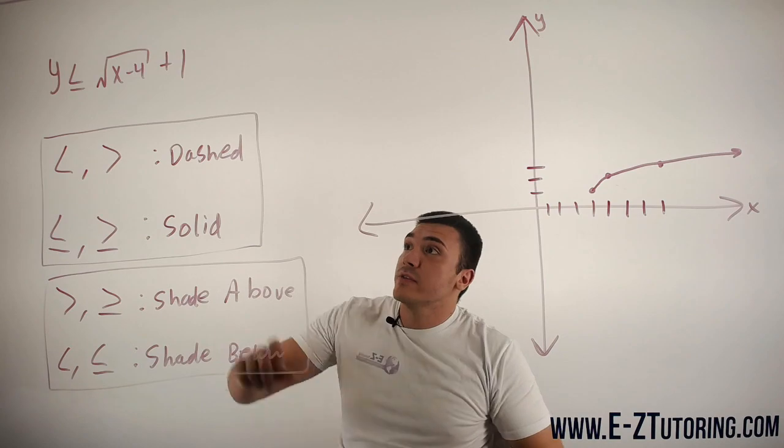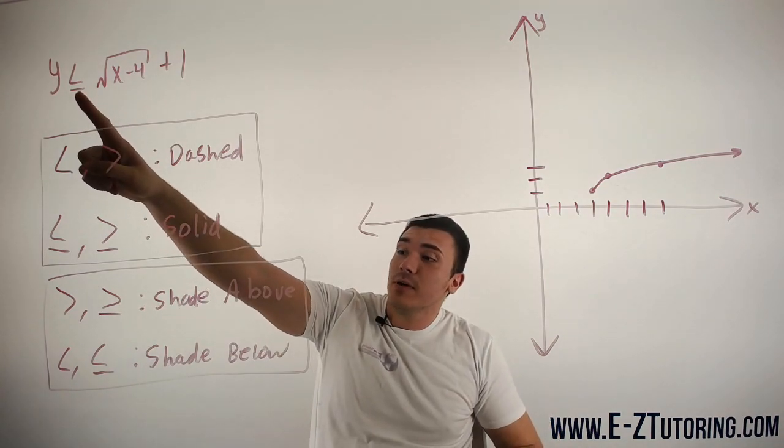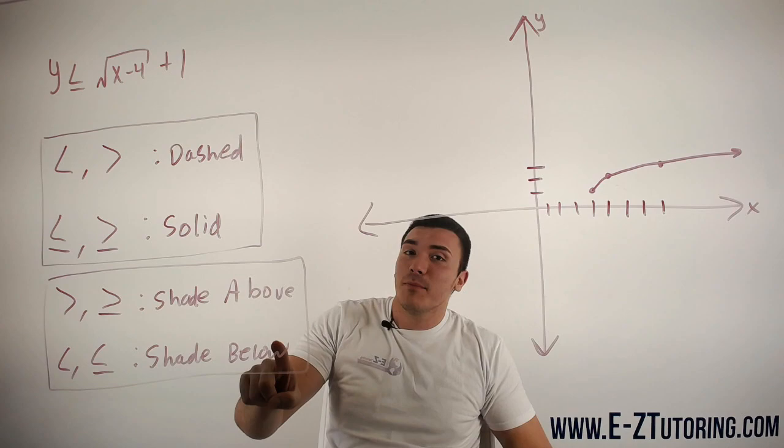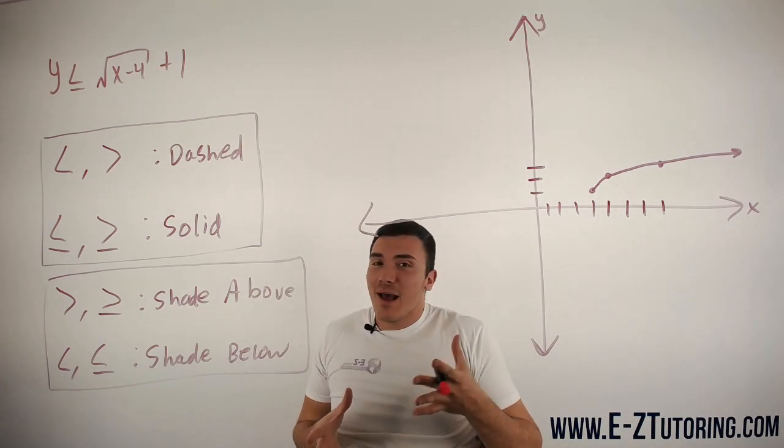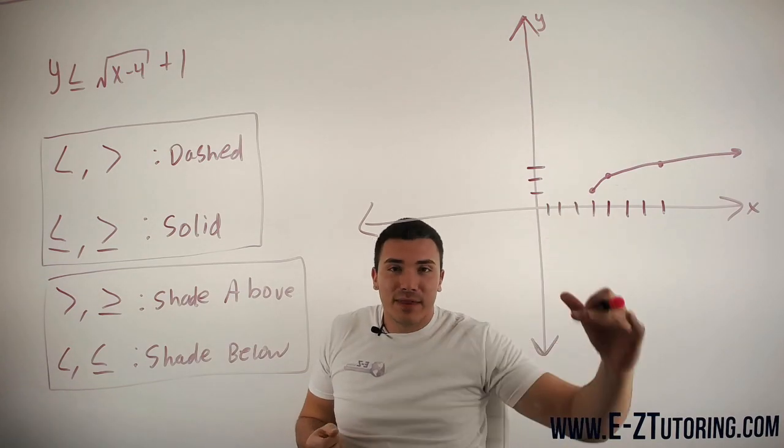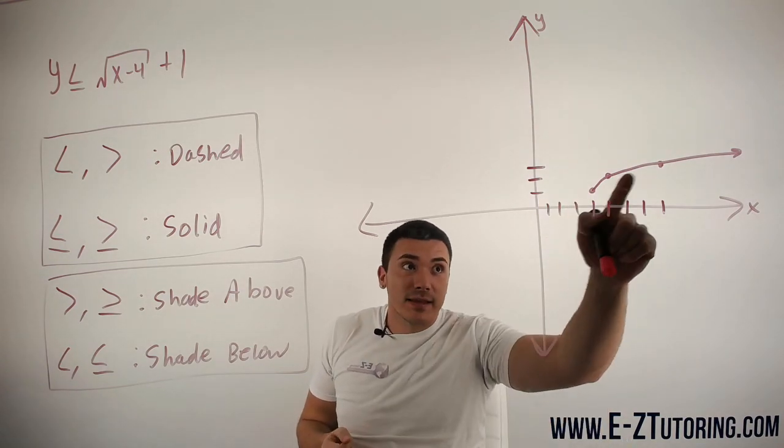Well, ours is less than or equal to, which is over here, which means we will be shading below. When we're shading, we're pretty much shading our solution to this. We shade everything below this line.